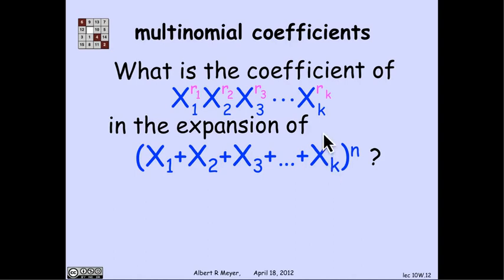And then if I ask how many of those products of any of these k variables have this many x₁'s, this many x₂'s, through this many xₖ's, I'm asking again a bookkeeper question, and the answer is n choose r₁, r₂ through rₖ.